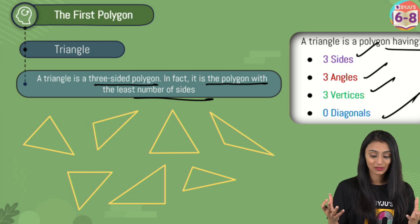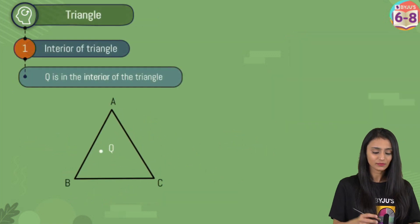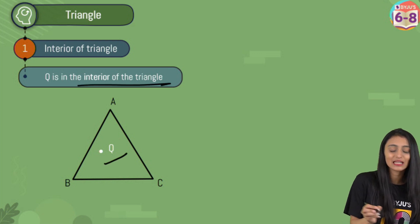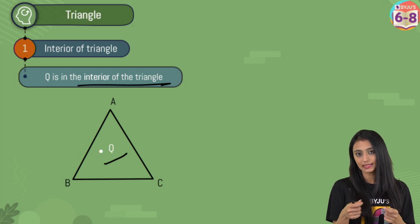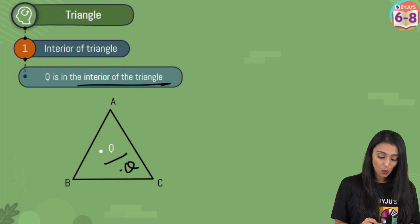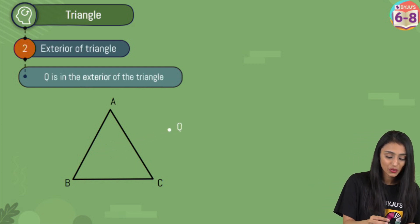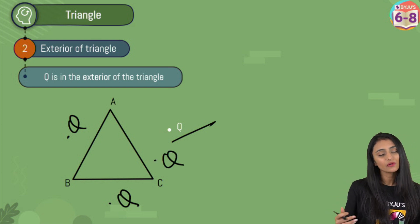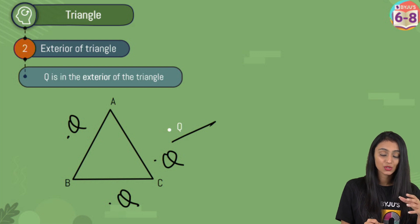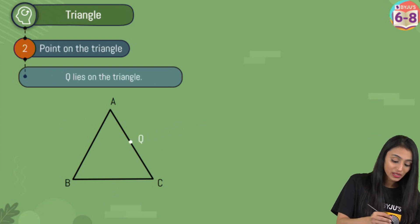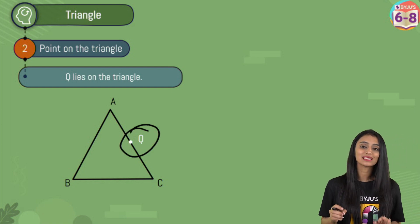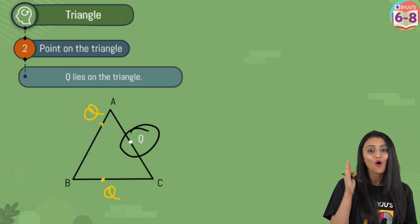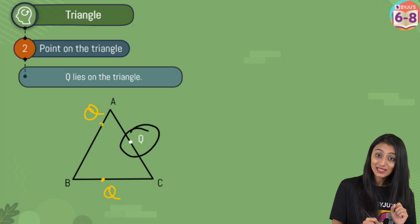Now let's talk about the interior of a triangle. Interior, as the name suggests, is something which is inside. In triangle ABC, point Q in the interior is inside the triangle regardless of where inside it is. The exterior means something which is outside — point Q outside the triangle is in the exterior, no matter where outside it is. And if point Q is lying on any of the sides of the triangle, we say that it is lying on the triangle.